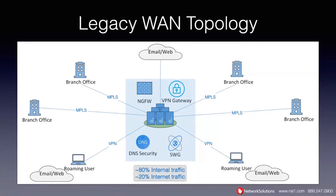The security stack in this scenario is where most of the controls are located — in the data center. You have your firewall, perhaps a next-generation firewall, likely doing the VPN gateway as well. You'll have some content filtering, perhaps DNS security or secure web gateway, set up to inspect select SSL traffic. In this model, about 80% of the traffic was internal — to and from the central data center — and about 20% of the traffic was internet traffic.